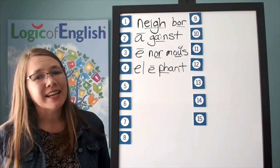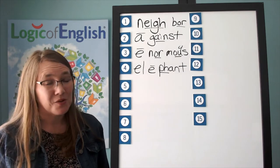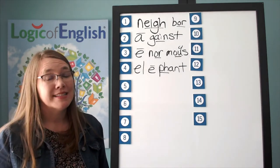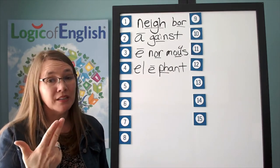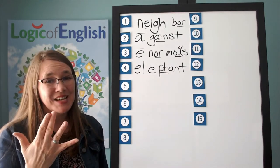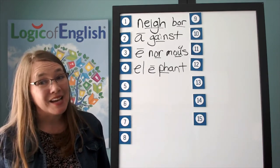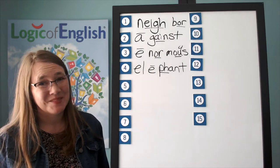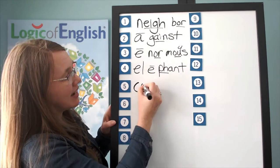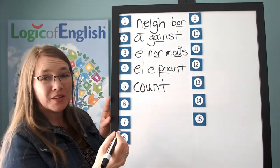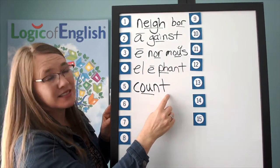The next word is count. Can you count how many people will be coming to the class? Count. Let's sound it out: C-OW-N-T. Go ahead and write count. Help me to write it: K, ow, n, t. How do you mark it? You'll underline the ow. K-ow-n-t. Count.